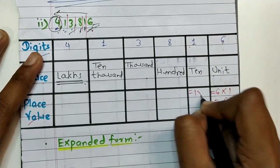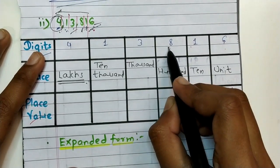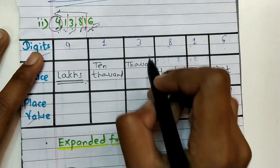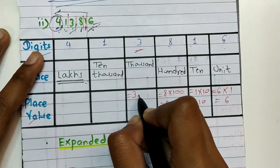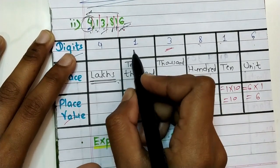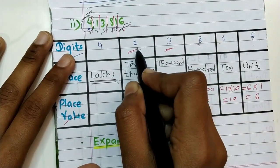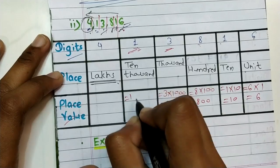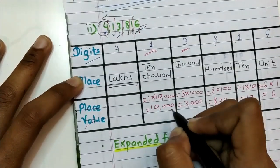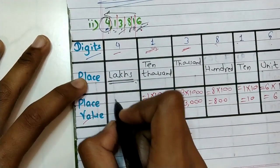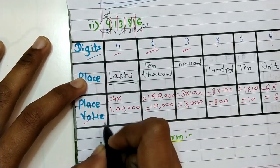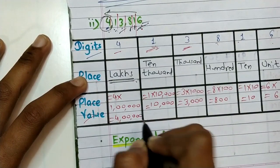Place value of eight equals eight into one hundred, which is eight hundred. Place value of three equals three into one thousand, which is three thousand. Place value of one equals one into ten thousand, which is ten thousand. Place value of four equals four into one lakh, which is four lakhs.